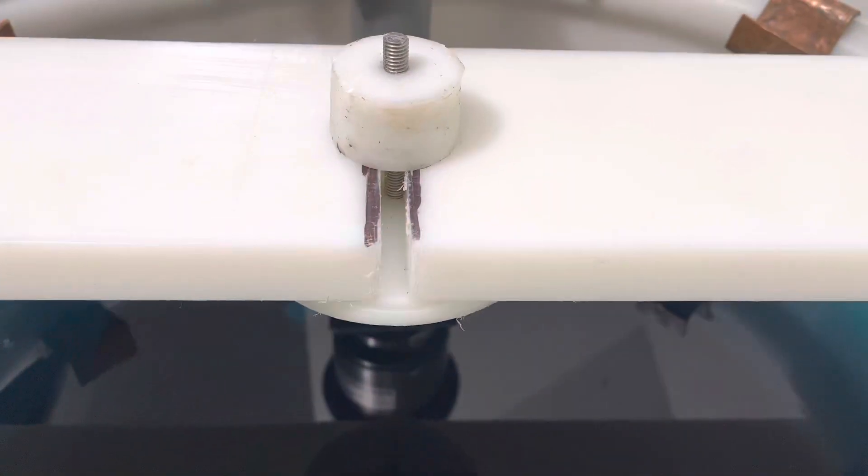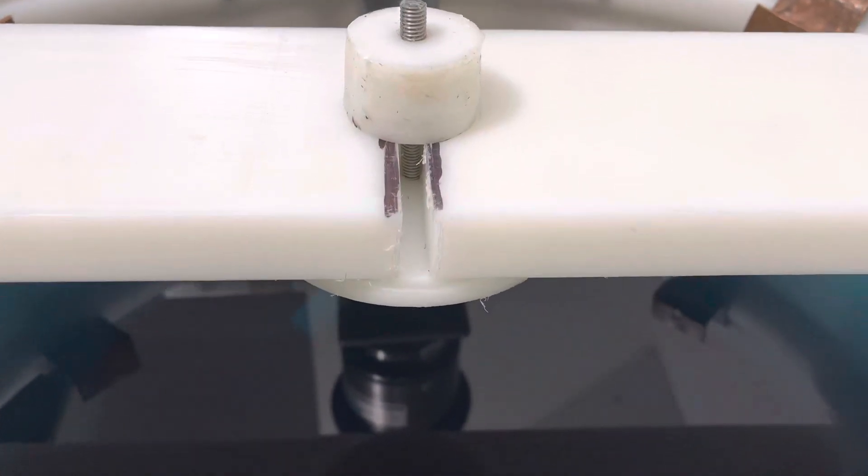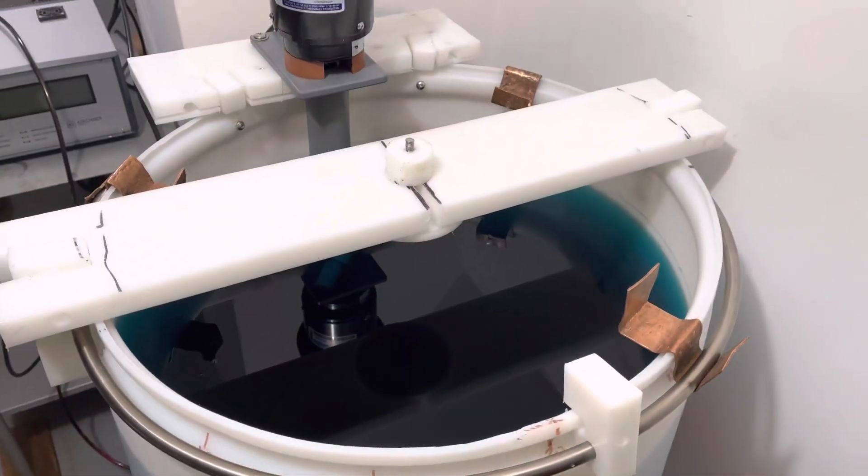And then a piece of plastic on the bottom and on the top that I can thread so that I can adjust the height of the cathode.